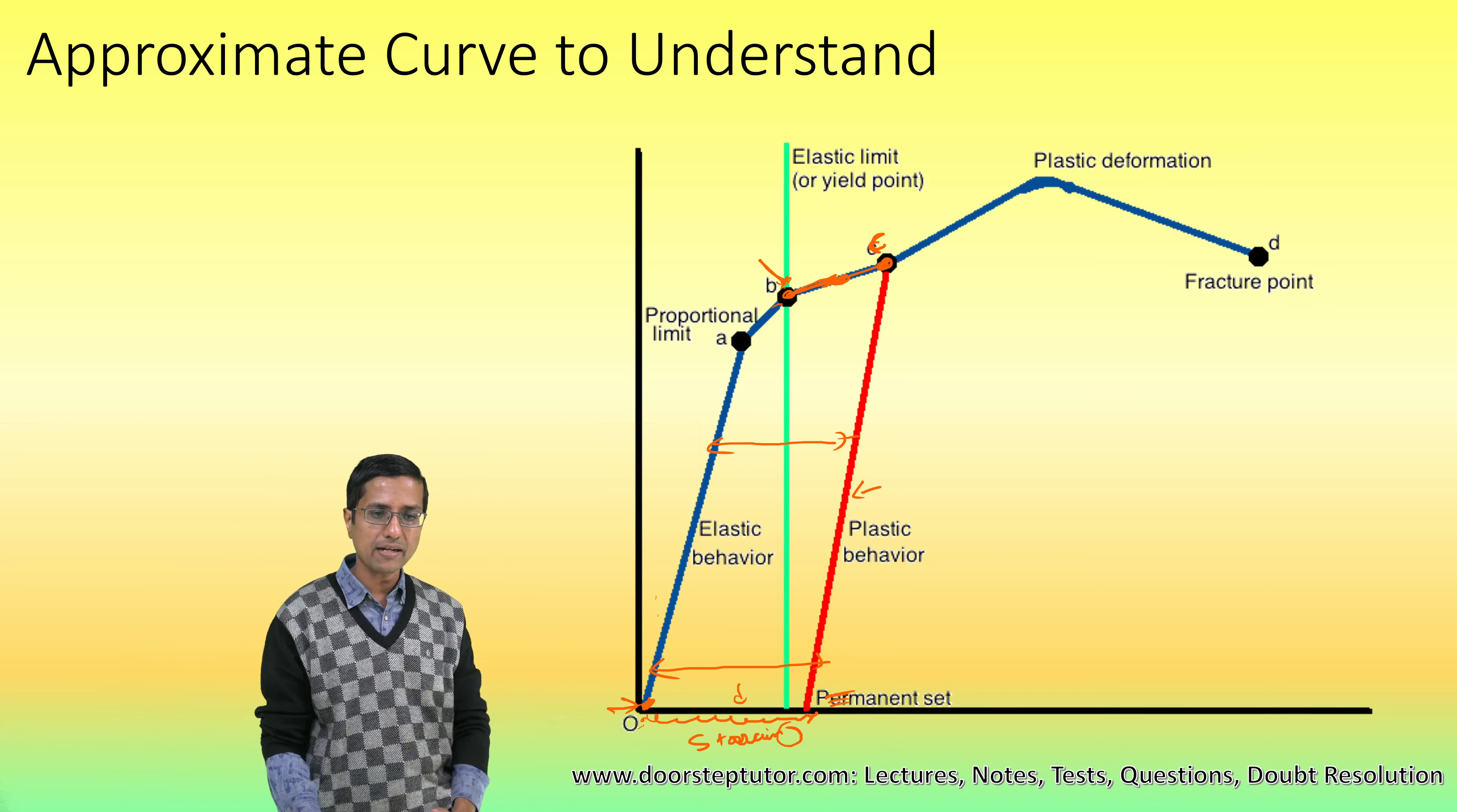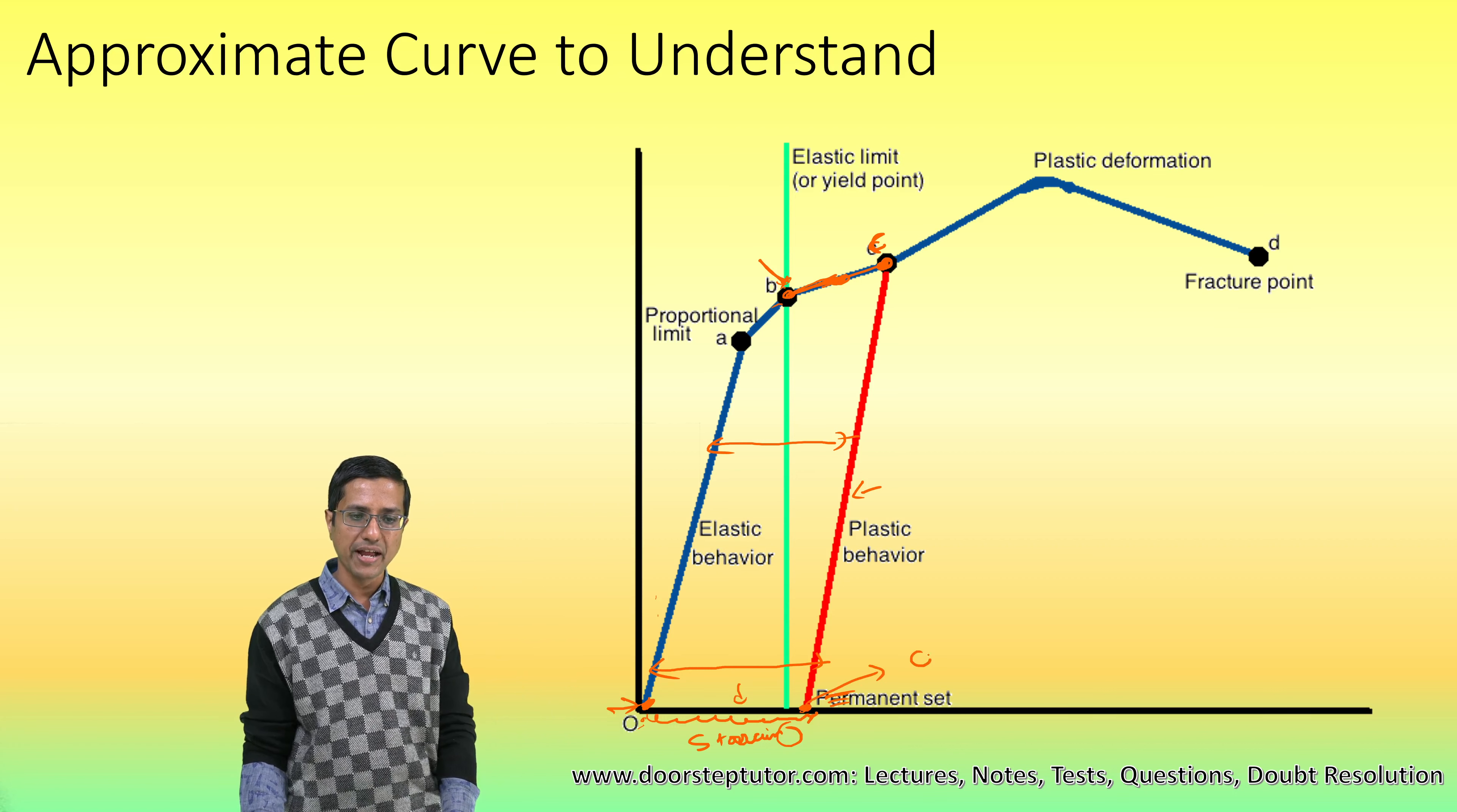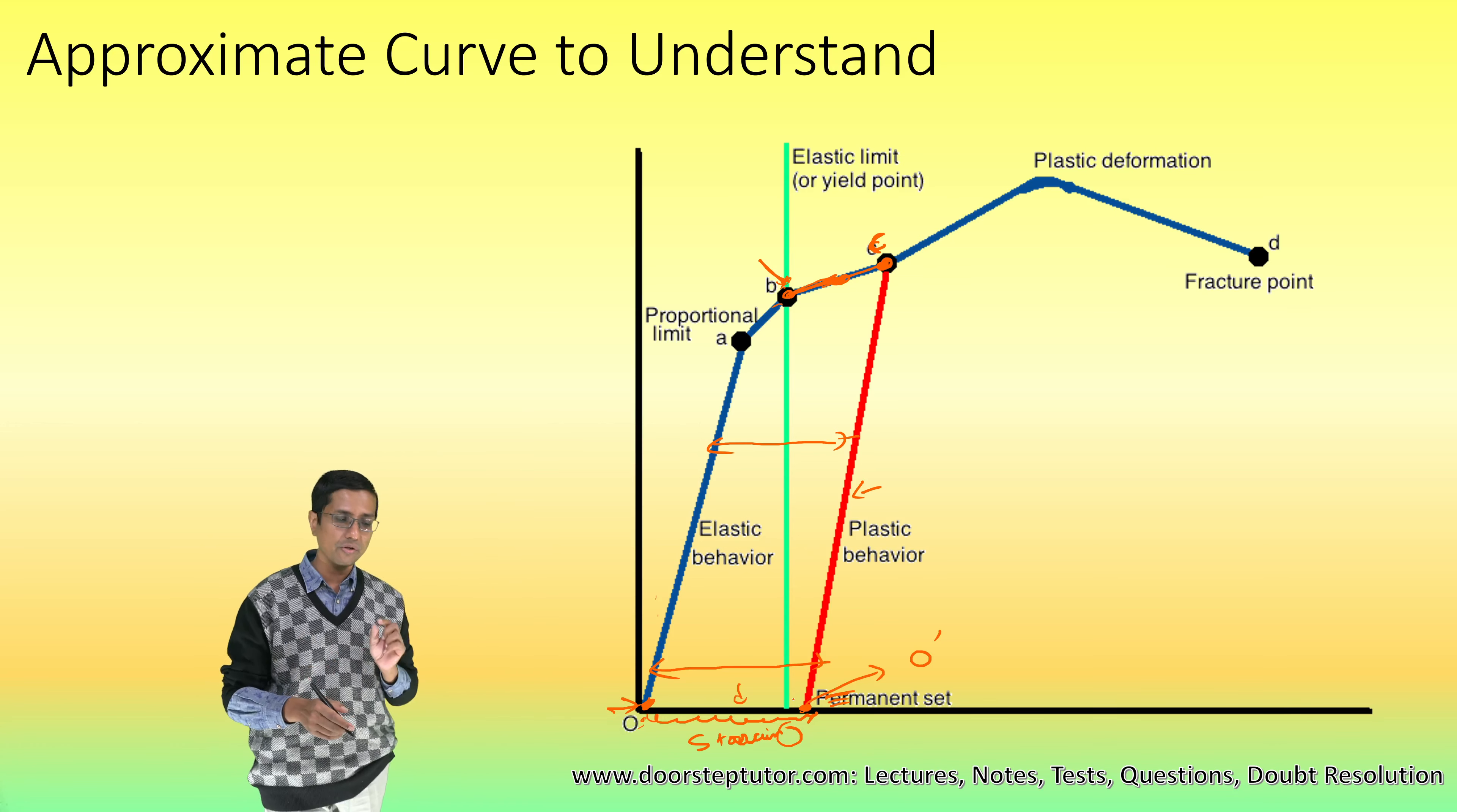These two lines are parallel. It is just that I go back to a new point, new point O prime, and the difference between O and O prime is known as permanent set. Hopefully this is very, very clear.